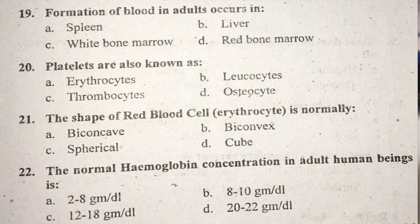Question number nineteen: Formation of blood in adults occurs where? Blood formation in adults occurs in the bone marrow — specifically the red bone marrow. Right answer is D.